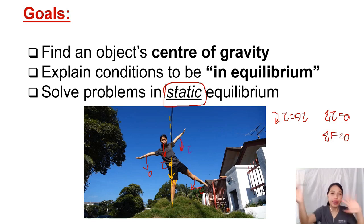So there's moving equilibrium, means you're moving at a constant speed, no acceleration. Or you can say static equilibrium, means you're at rest. So we're going to look today, we've already looked at center of gravity, we're going to look at what it means to be in equilibrium and how to solve problems in static equilibrium.